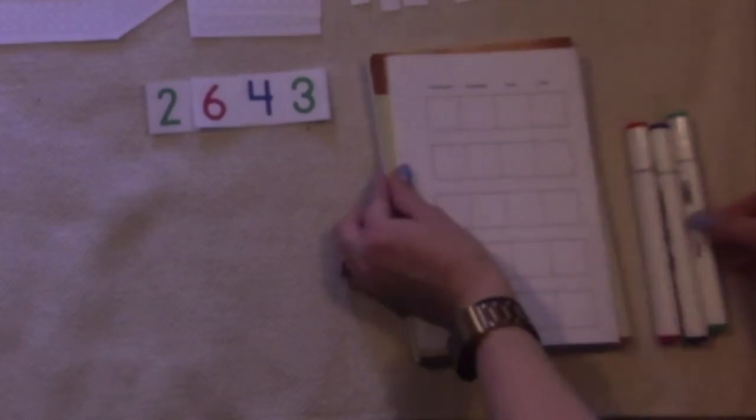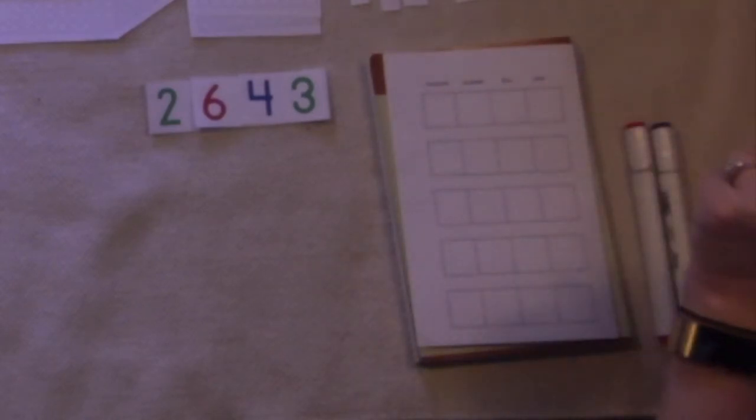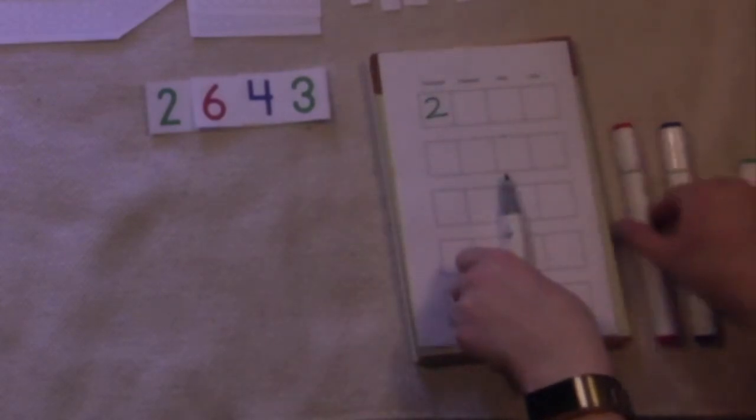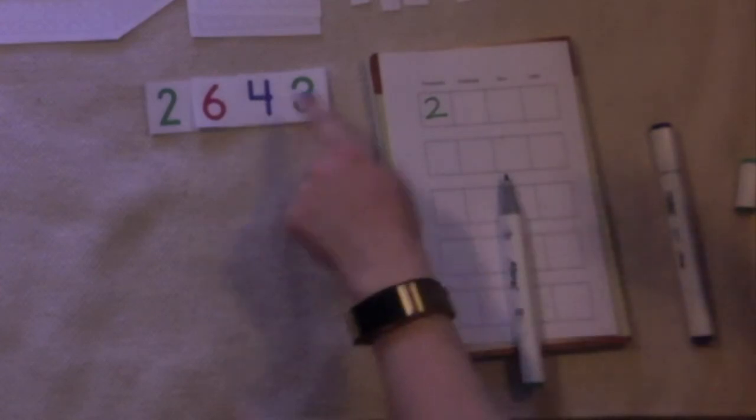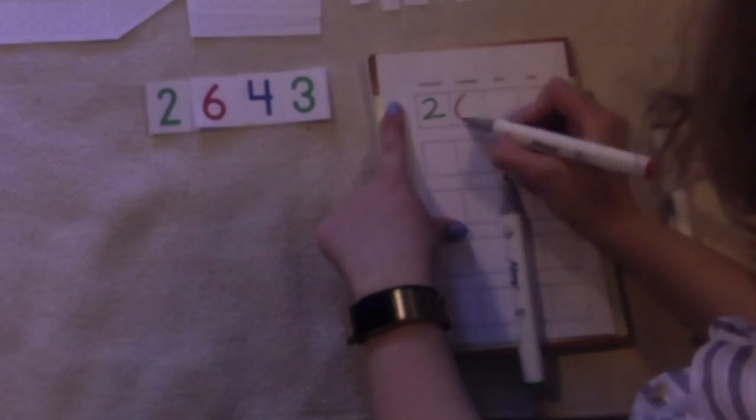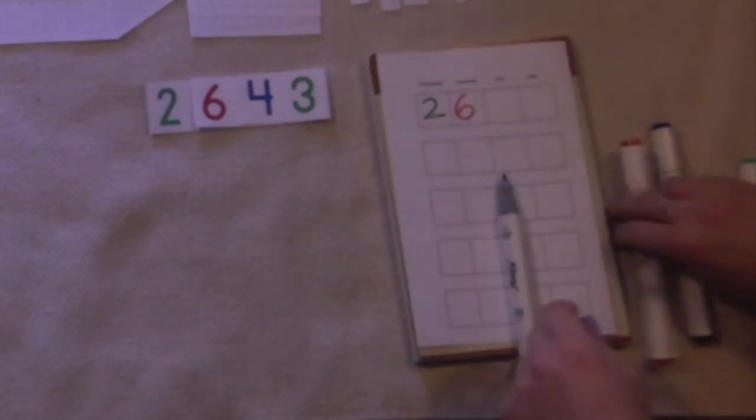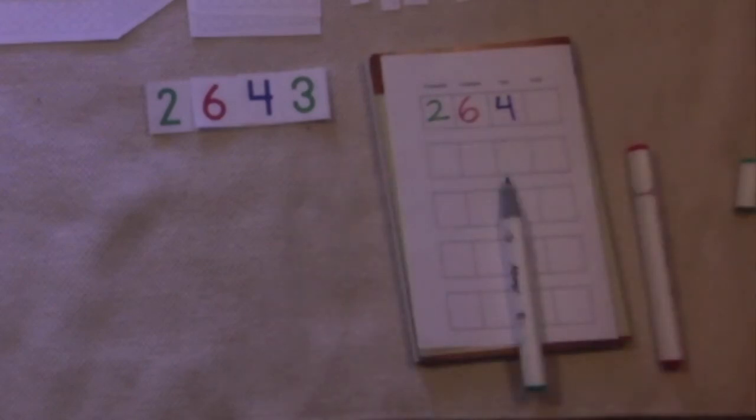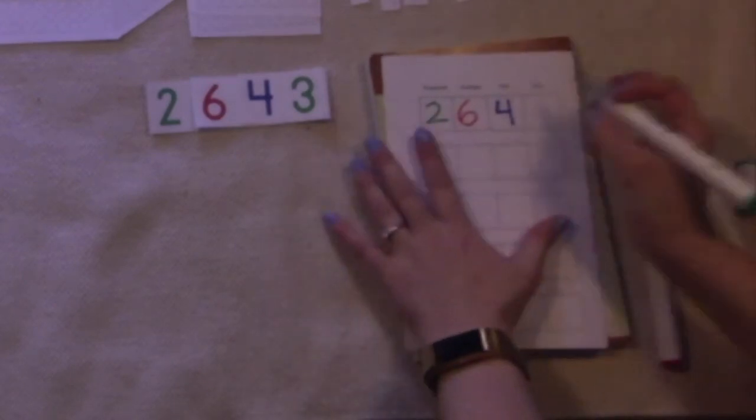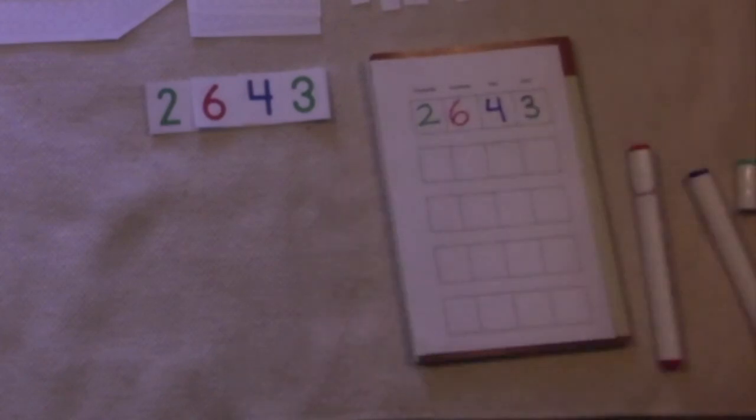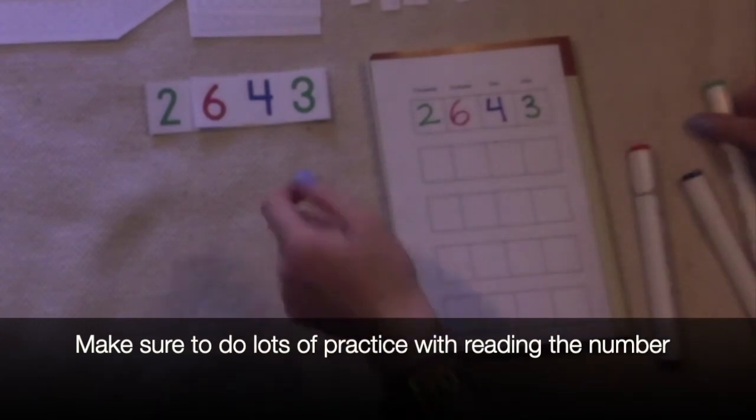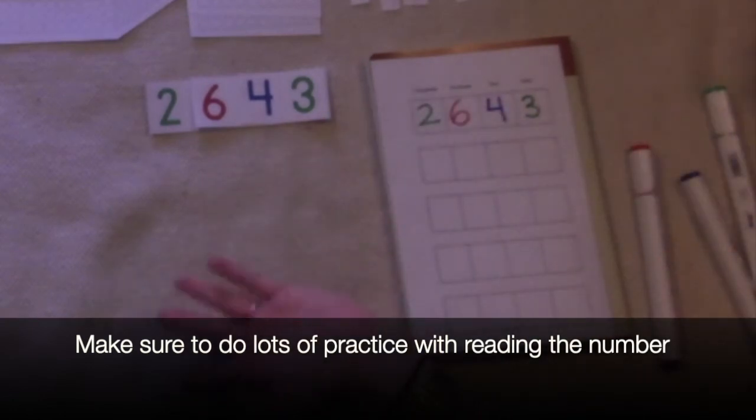To record it, we're going to use these same colors that are on here. My thousands are green. Two thousand. My hundreds are red. Six hundred. My tens column is blue. Forty. And my units are back to green. Two thousand, six hundred, forty-three. We built that. And you would celebrate with them this achievement of building this giant number.